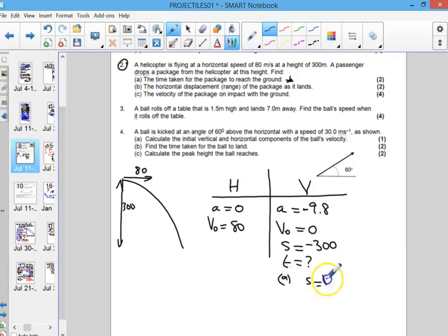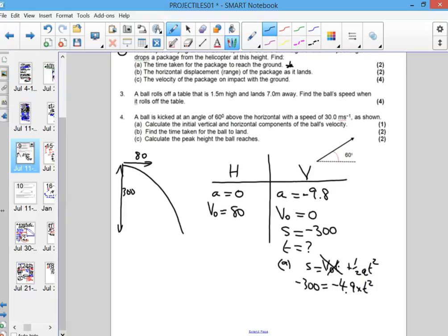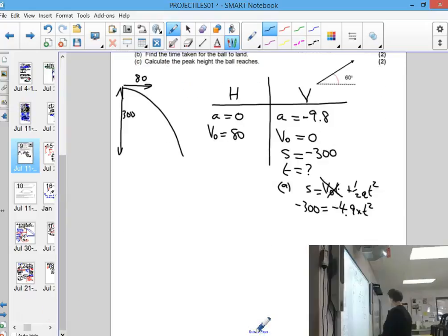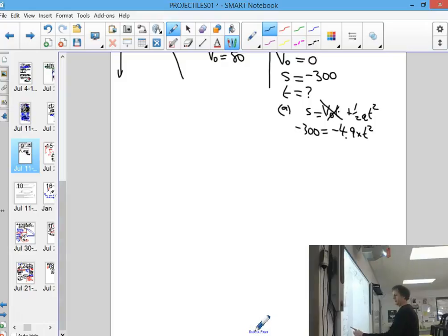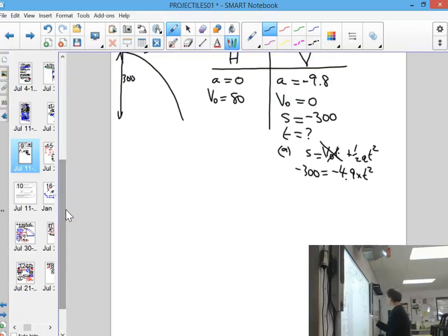So s equals v₀t plus half at squared, and you could get into the habit of using the vertical values here. So you've got minus 300 equals half of minus 9.8, which is minus 4.9, times t squared. To get rid of that, you want to rearrange and find t equals the square root of 300 over 4.9. If you're doing that, you'll get 7.8 seconds.